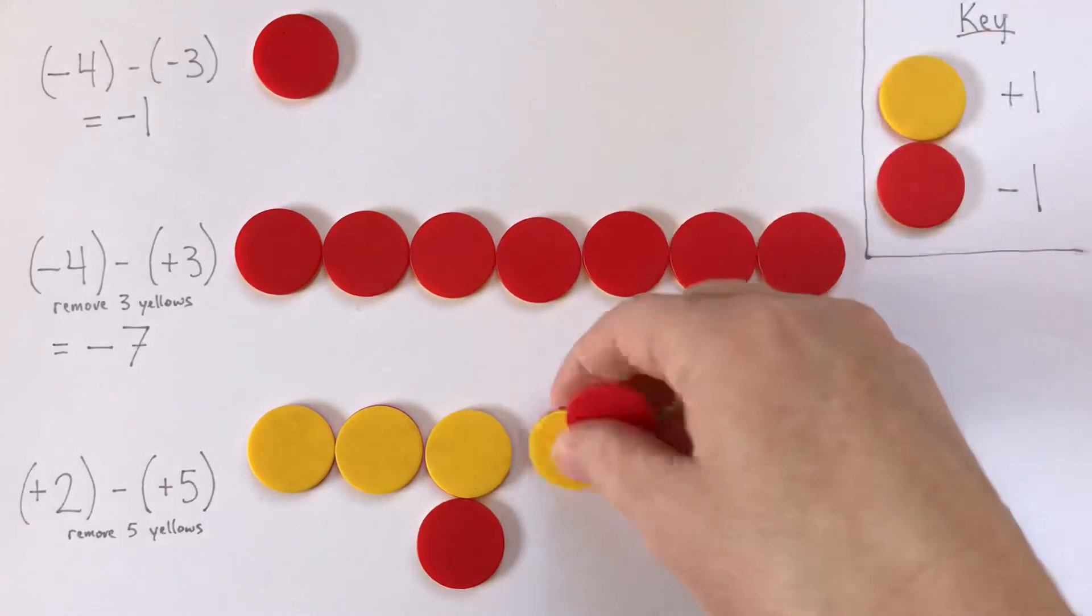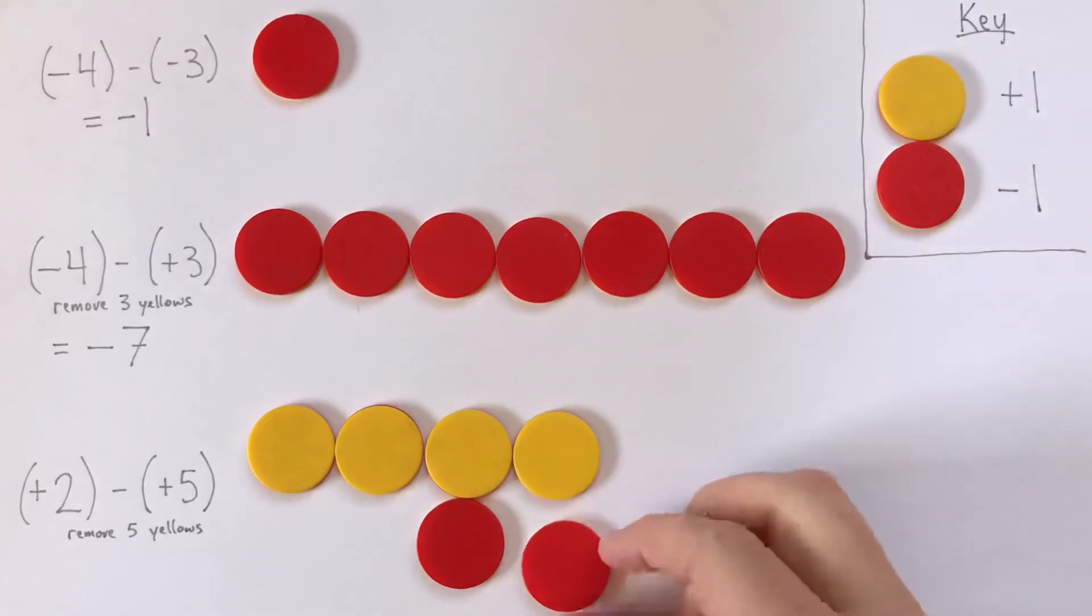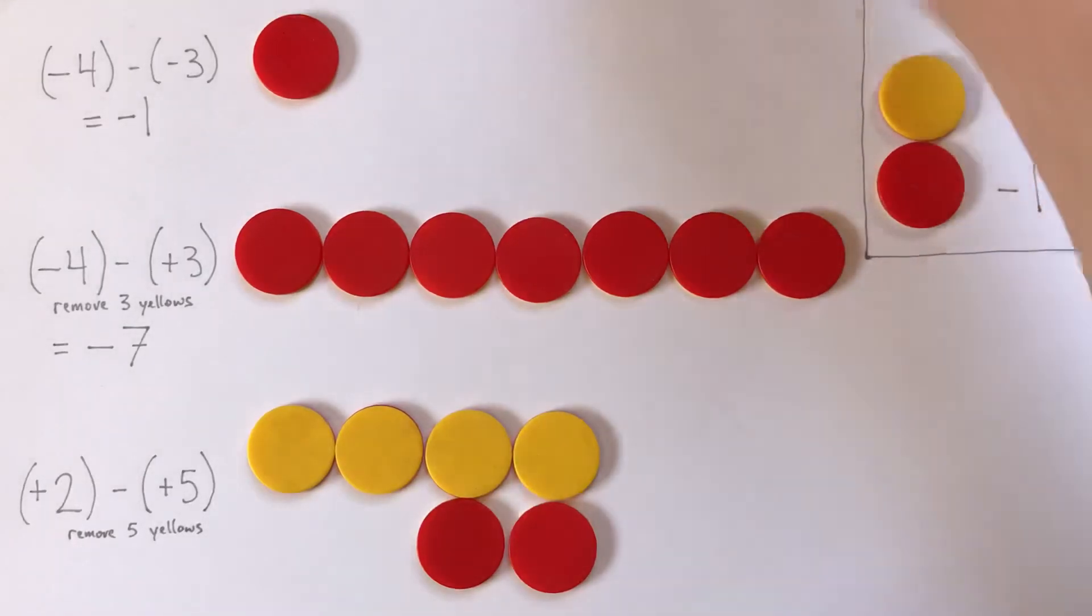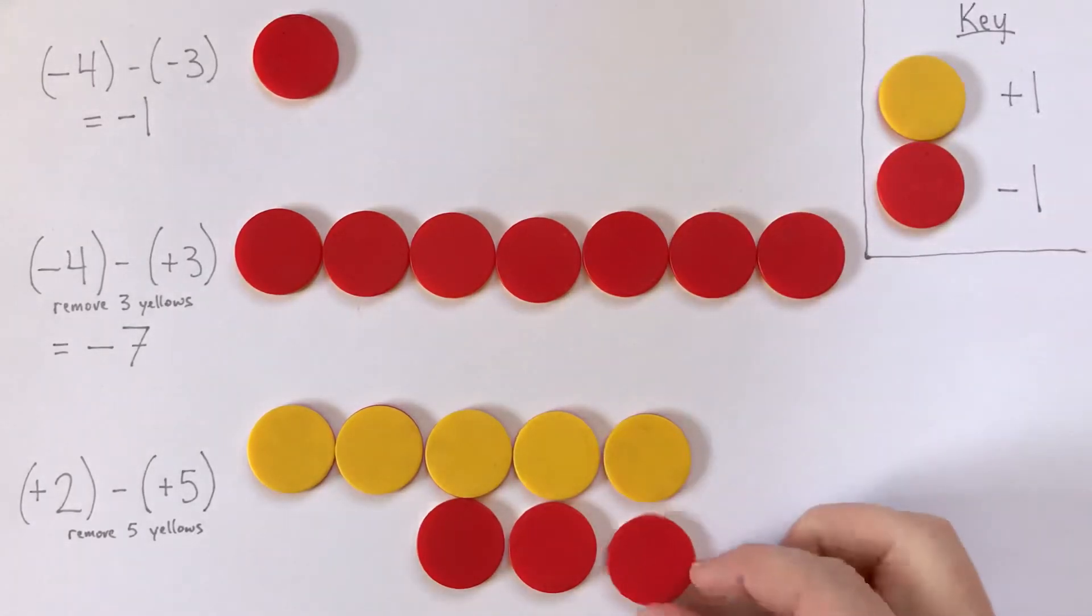That is still positive 2, because this is 0. I still don't have 5 yellows. Getting close though. That is still positive 2. And now I have 5 yellows. So now I can do my taking away.